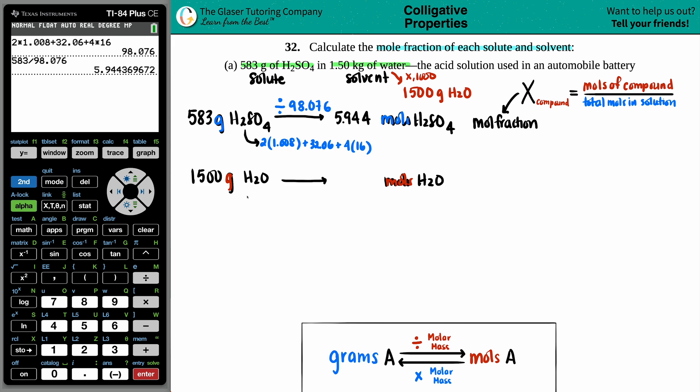Now I want to take the grams of H2O and convert to the moles. I have to find the molar mass. I have two hydrogens, so 1.008 times 2, plus the oxygen, which is 16. 2 times 1.008 plus 16, I get 18.016. I'm just going to take that number and divide it by 18.016. 1500 divided by that number, and I get 83.26 moles. It's a solvent, so it makes sense.